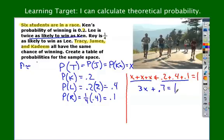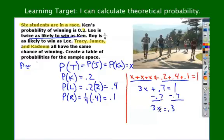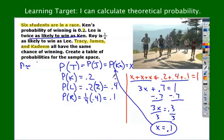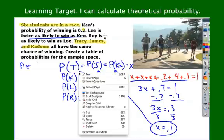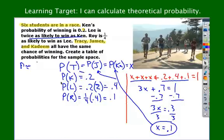To solve this two-step equation, subtract 0.7 from both sides first, giving 3x equals 0.3, then divide both sides by 3, and x equals 0.1. Remember what x means — it means the probability for Tracy, James, and Kadeem is each 0.1. That's the whole point: how do we use algebra to calculate probabilities.